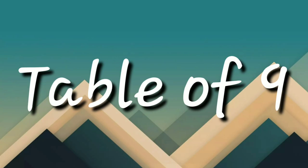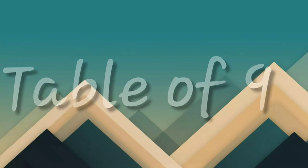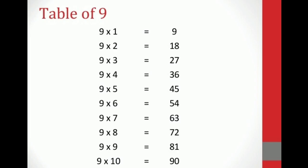Now let us talk about the table of 9. Let us recite it first of all. 9 ones are 9, 9 twos are 18, 9 threes are 27, 9 fours are 36, 9 fives are 45, 9 sixes are 54, 9 sevens are 63, 9 eights are 72, 9 nines are 81, 9 tens are 90.